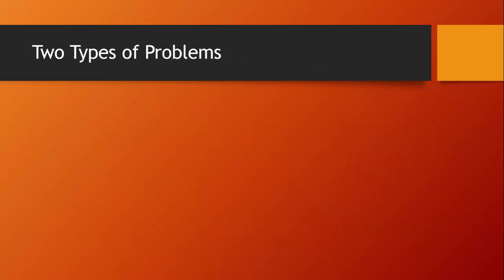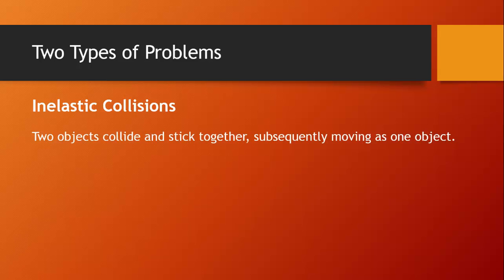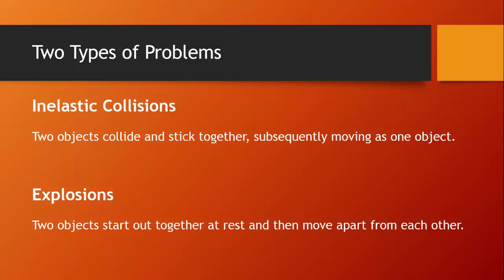There are two main types of problems we'll be working with that involve the law of conservation of momentum. The first type are called inelastic collisions — this is when two objects collide, like in the previous example, only here they stick together and subsequently move as one object. The other type is what I call an explosion, which doesn't have to have a loud bang. This is simply when two objects start out together at rest and then move apart from each other.